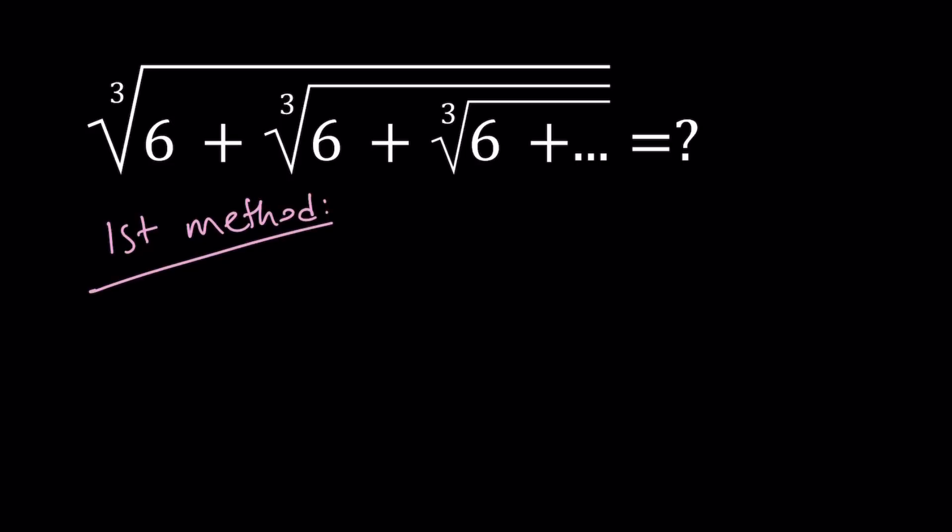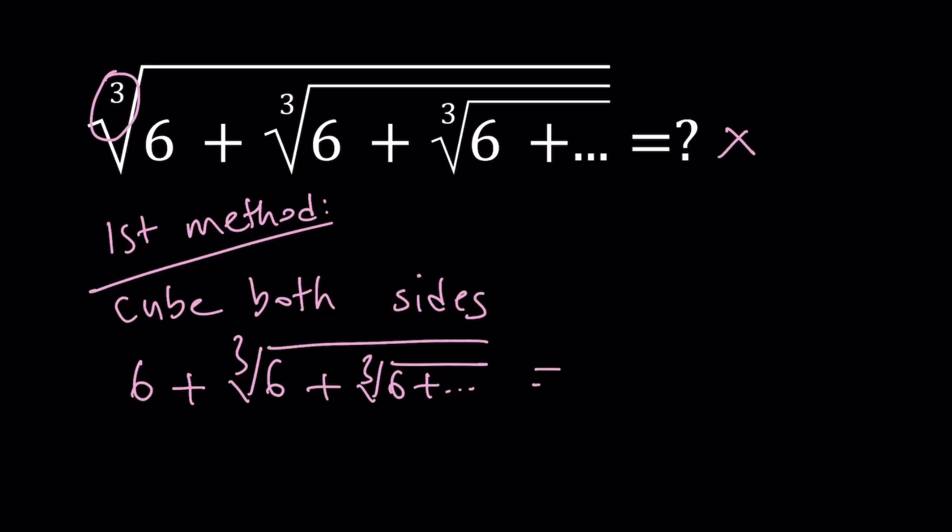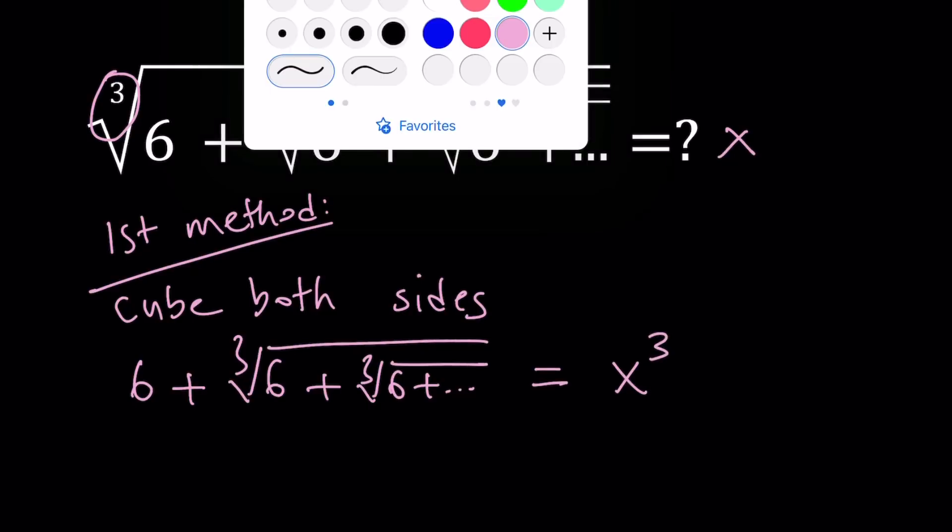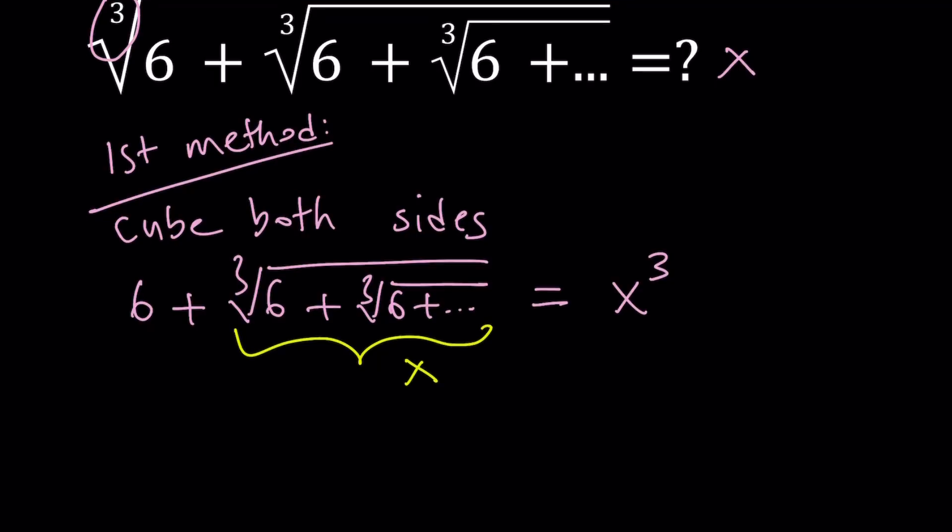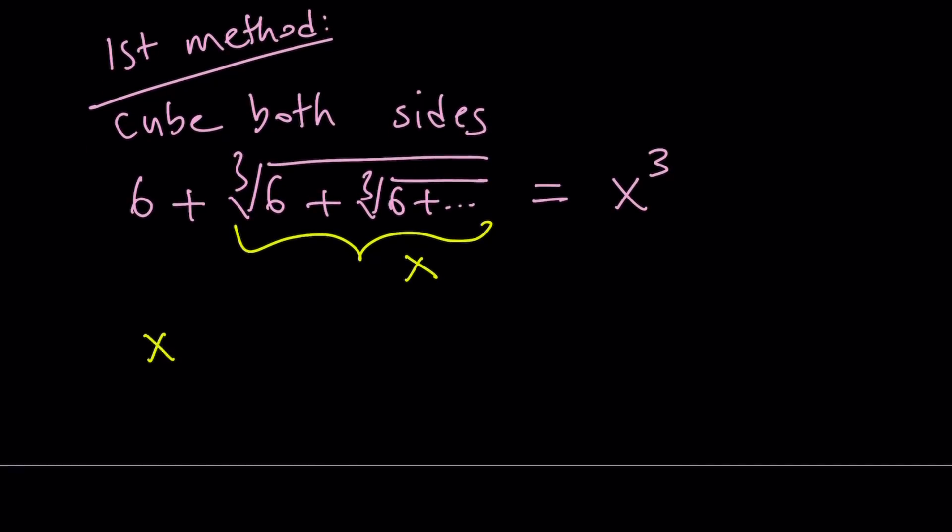For my first method, I'm going to call this expression x, and that's going to go for both methods. And then I would like to cube both sides. When I cube both sides, the outermost cube root is going to disappear, leaving us with 6 plus the cube root of 6 plus the cube root of 6 plus dot dot dot. And the right-hand side is going to be x cubed.